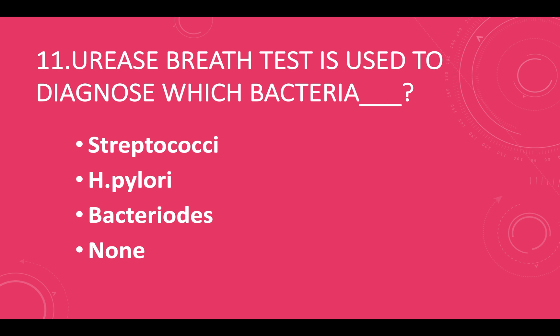Urea breath test is used to diagnose which bacteria? Option A — streptococci, option B — H. pylori, option C — bacteroides, option D — none of these. Answer: option B, H. pylori.